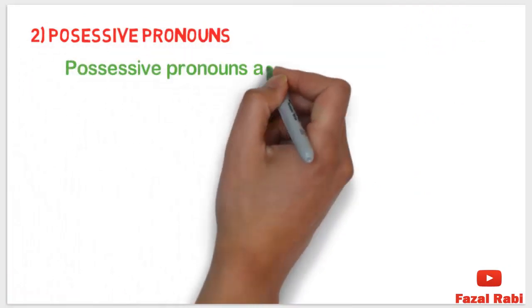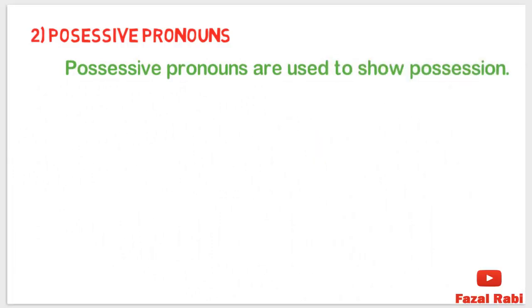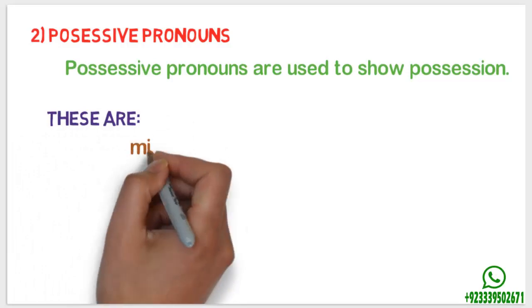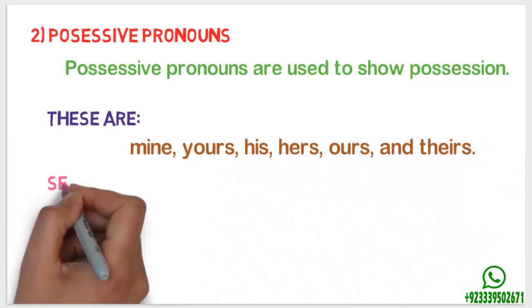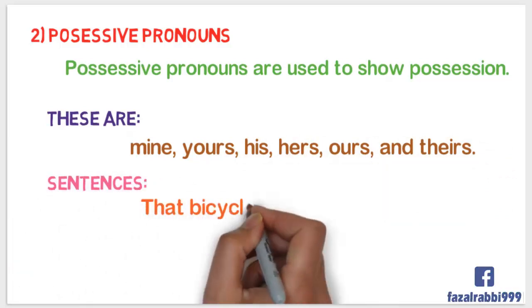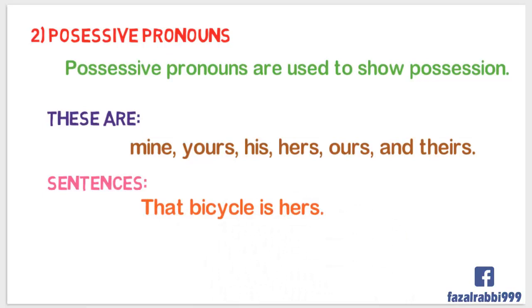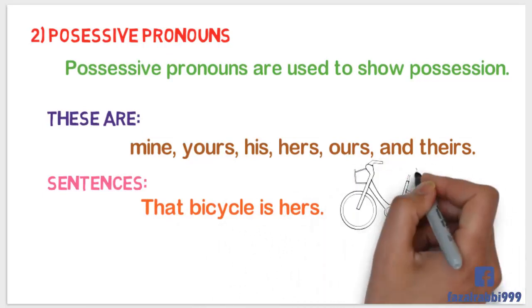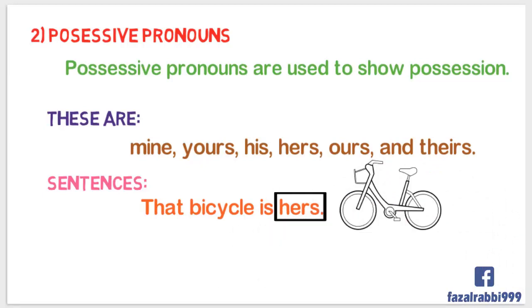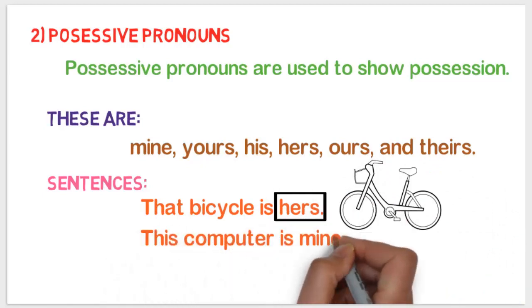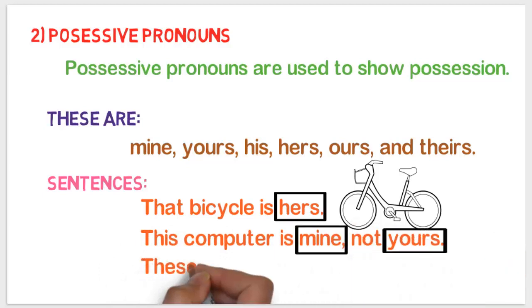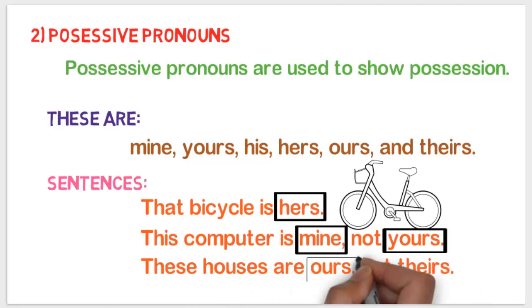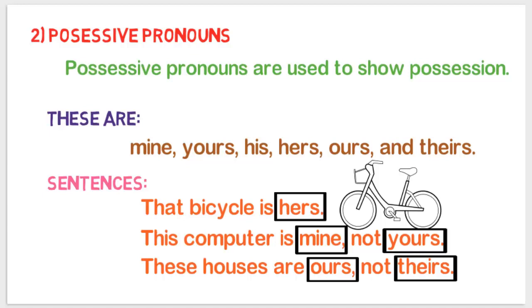Number two: possessive pronouns. Possessive pronouns are used to show possession. These are mine, yours, his, her, hers, ours, and theirs. For example: 'Their bicycle is hers,' where hers is a possessive pronoun. 'This computer is mine, not yours,' where mine and yours are possessive pronouns. 'These houses are ours, not theirs,' where ours and theirs are possessive pronouns.